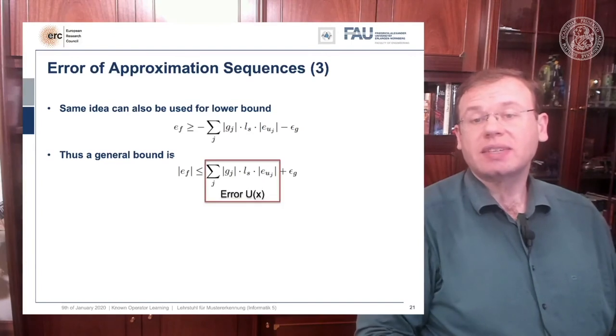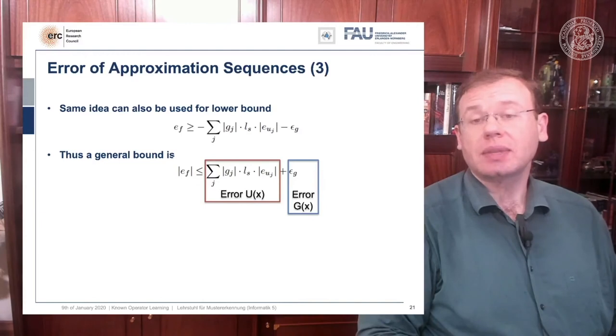This is interesting because here we see that this is essentially the error of u of x amplified with the structure of g plus the error introduced by g. So if we know u, the error u cancels out. And if we know g, the error g cancels out. And of course if we know both, there is no error because there's nothing that we have to learn.